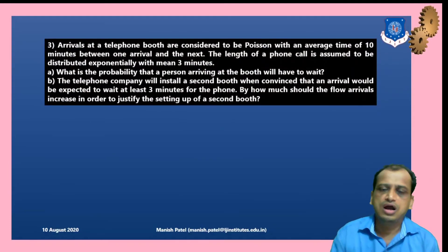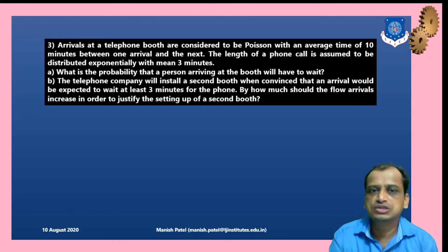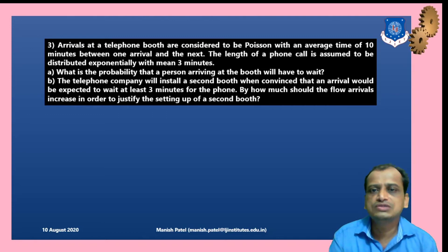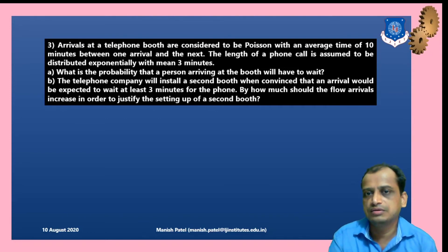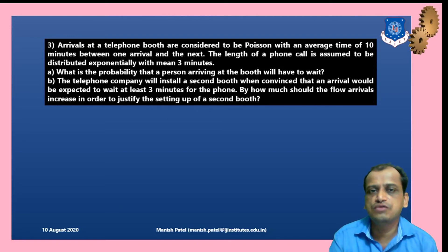Problem 3: Arrivals at a telephone booth follow a Poisson distribution with a rate of 1 arrival every 10 minutes. The length of a phone call is exponentially distributed with a mean of 3 minutes. We need to find: (a) the probability that a person arriving at the booth will have to wait, and (b) how much the arrival rate must increase to justify installing a second booth, given the expected wait should be at least 3 minutes.